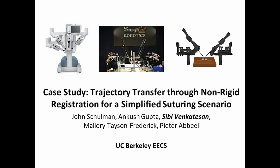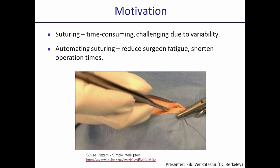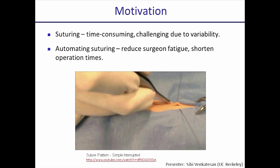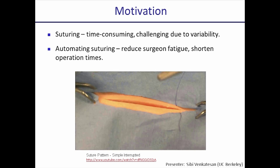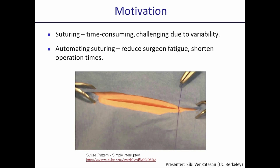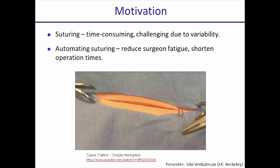I'm Sibi Venkatesan from UC Berkeley and I'll be talking about how we use non-rigid registration to teach a robot how to suture from human demonstrations. Suturing is a time-consuming and repetitive task. Since we work with deformable objects like skin and flesh, the variability in shape and structure of the tissue makes this especially challenging, but a fast and robust autonomous procedure would go a long way in reducing surgeon fatigue and shortening operation times.